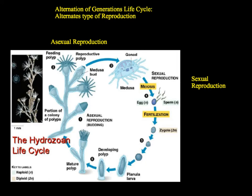Here's the basic alternation of generations life cycle found in the cnidarians. The polyp form undergoes asexual reproduction in which medusae are budded off and released into the water. This free-swimming form lives its part of the life cycle and then releases sperm and eggs into the water. Those fertilize, develop into a zygote, and then into the planula larva. That larva settles to the bottom, attaches, and becomes a polyp over time, and then the cycle repeats itself.